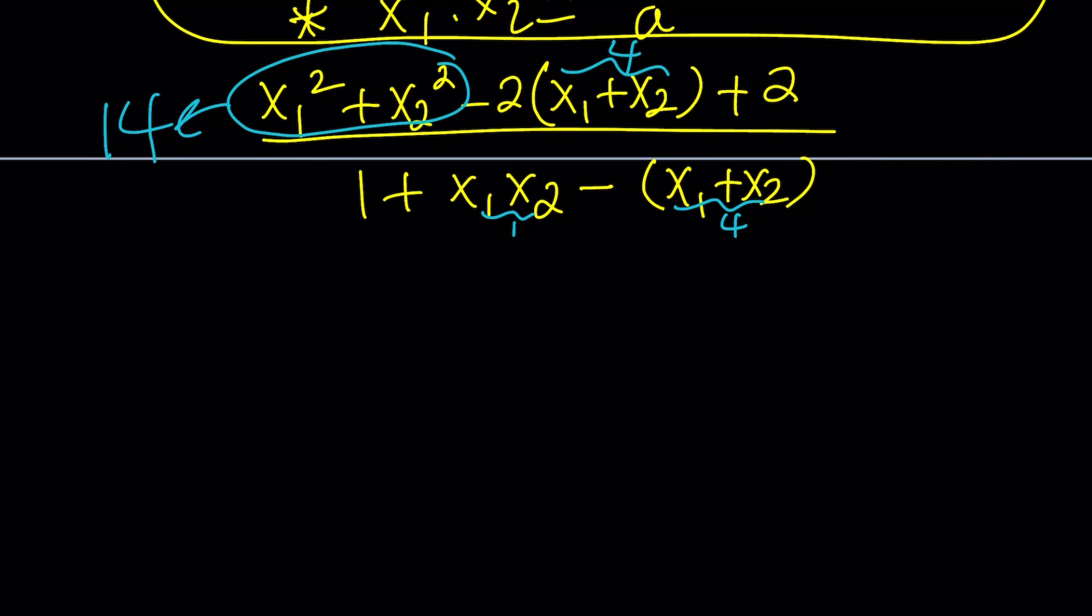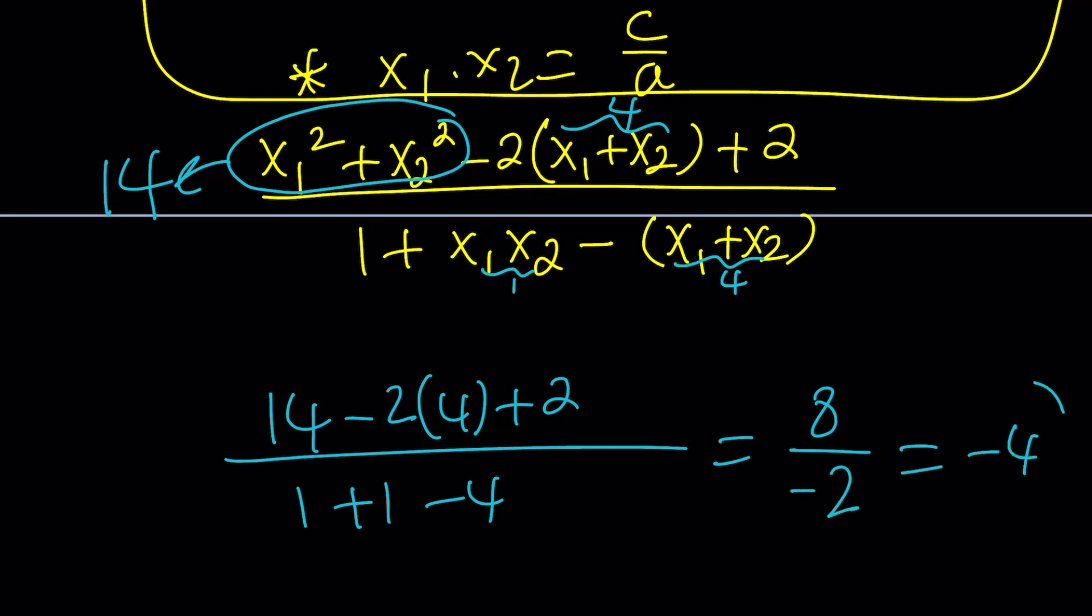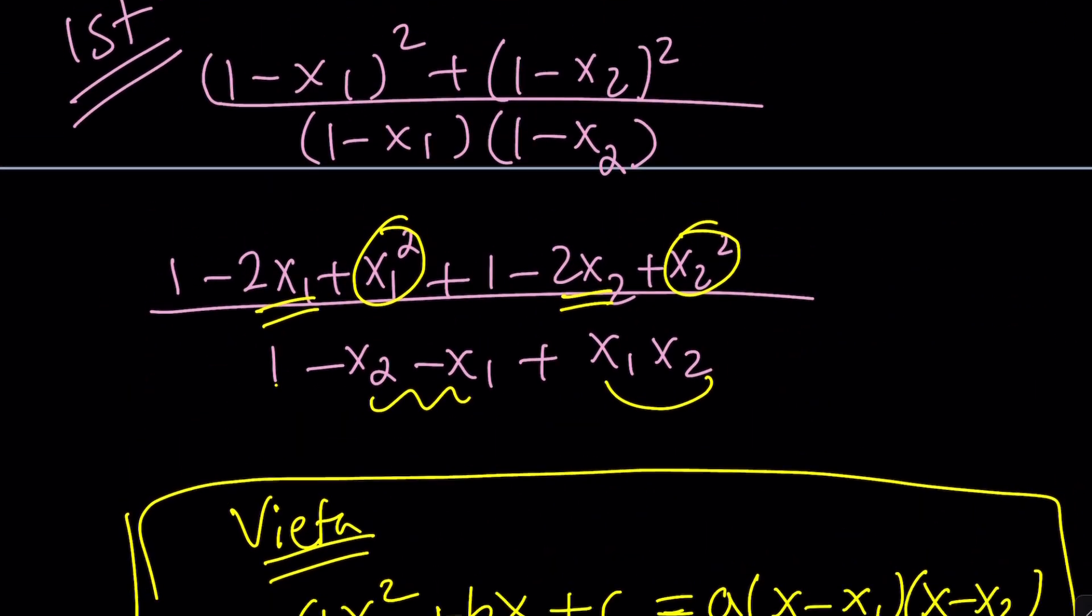Now, this is going to be 14 minus 2 times 4 plus 2 divided by 1 plus 1 minus 4. This is going to be 14 minus 8, which is 6, plus 2 is going to be 8. And 1 plus 1 is 2, 2 minus 4 is equal to negative 2. So the answer would be negative 4. So this sum is equal to negative 4. I hope it does, because now we're going to look at the second method, because that was the first method.